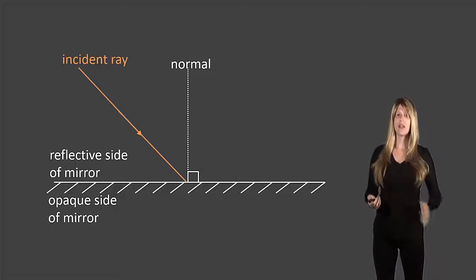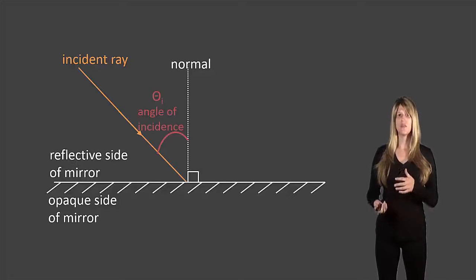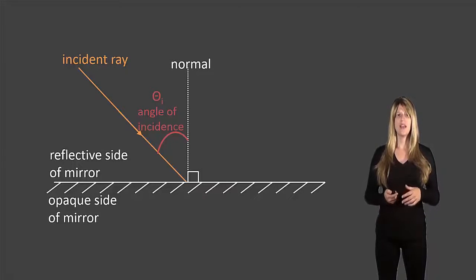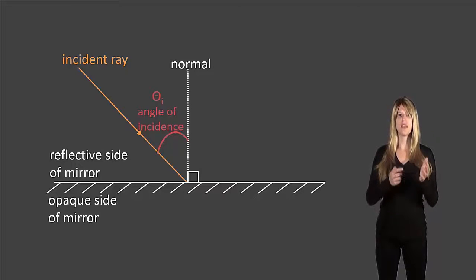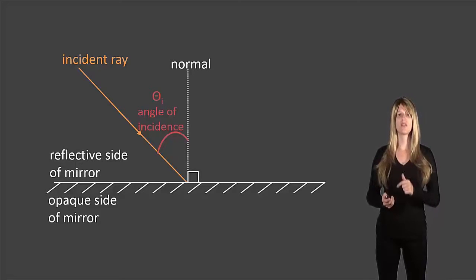The light ray that comes in towards the mirror is called the incident ray, and the angle between the incident ray and the normal is the angle of incidence, represented by theta subscript i. Be careful — the measurement is always between the incident ray and the normal, not between the incident ray and the mirror. We always measure next to the normal.